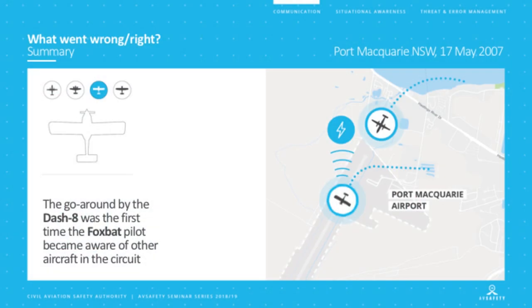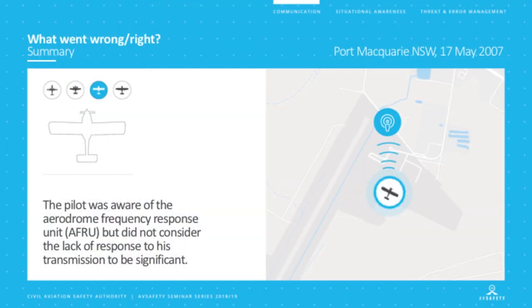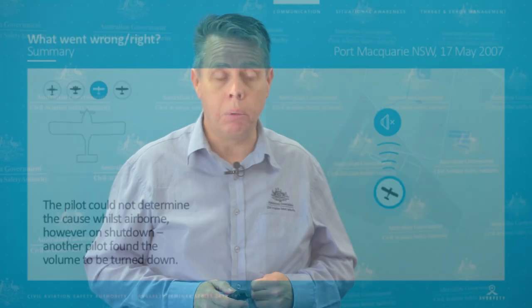Breakdowns in communication can have serious ramifications for air safety. The Foxbat then made a good decision and departed the circuit to troubleshoot what they thought was a radio problem, getting away from other aircraft. Two pieces of advice when airborne with a problem: first, get away from other aircraft, and second, get away from the ground. The last thing you want is to troubleshoot an issue while mixing in the circuit in close proximity to other traffic.